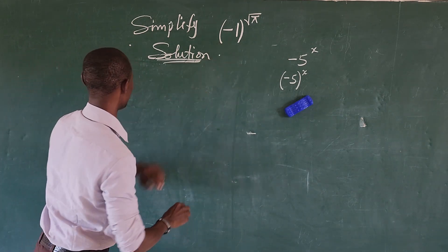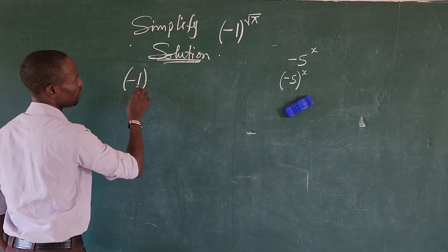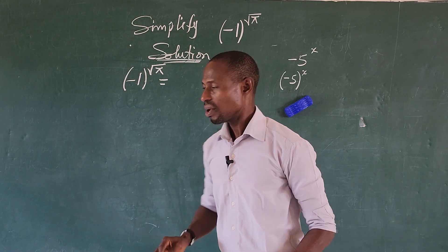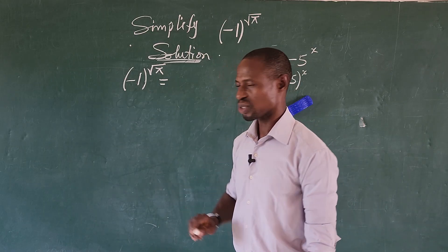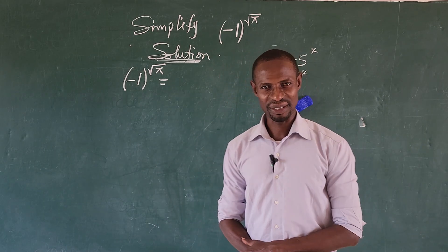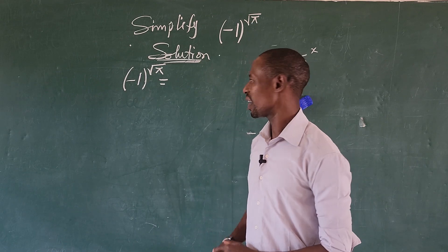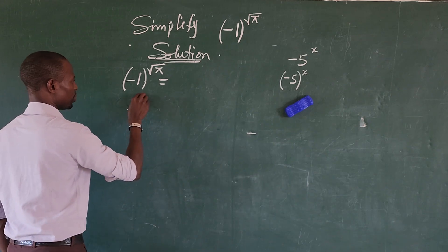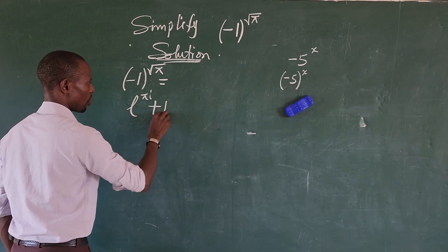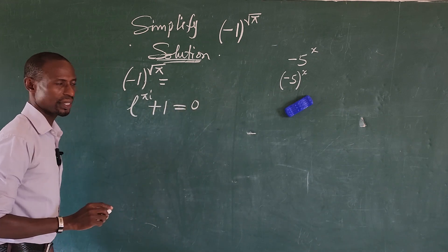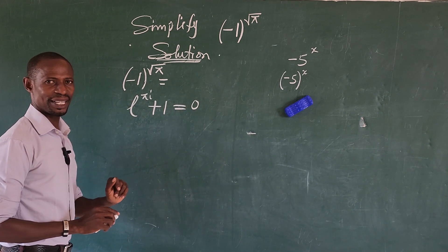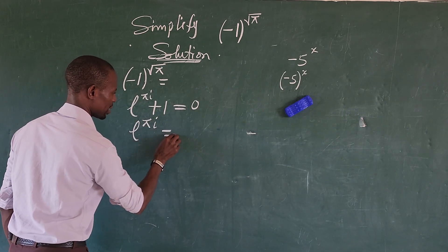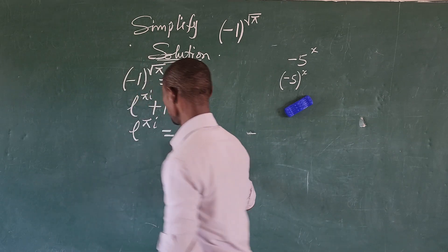We have (-1) raised to the power of square root of pi. We think of rewriting minus one using Euler's identity, which says that e to the power of pi·i plus one equals zero. If we move the one to the other side, that gives us e to the power of pi·i equals minus one.